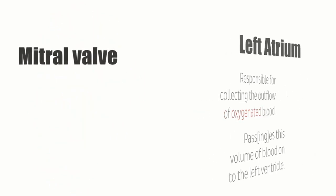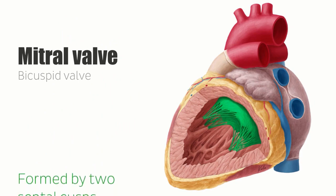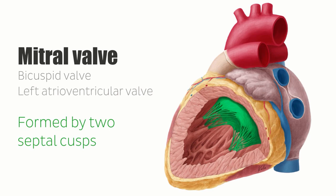The mitral valve is also known as the bicuspid valve because it is formed by two septal cusps. Occasionally, it is also mentioned in literature as the left atrioventricular valve.